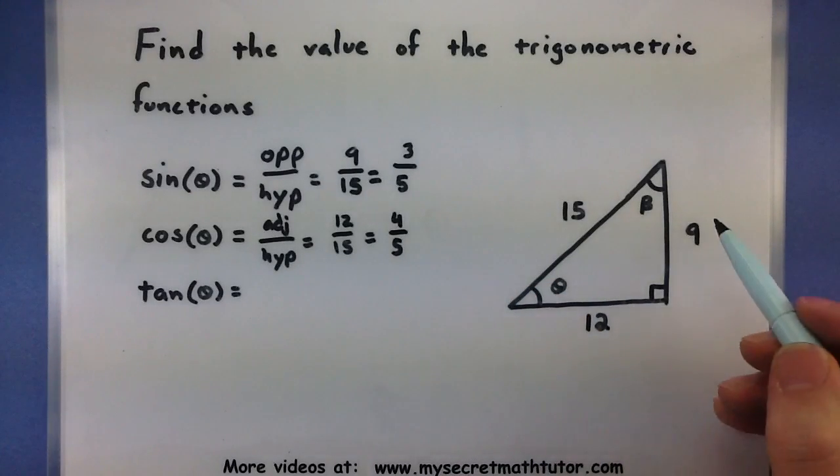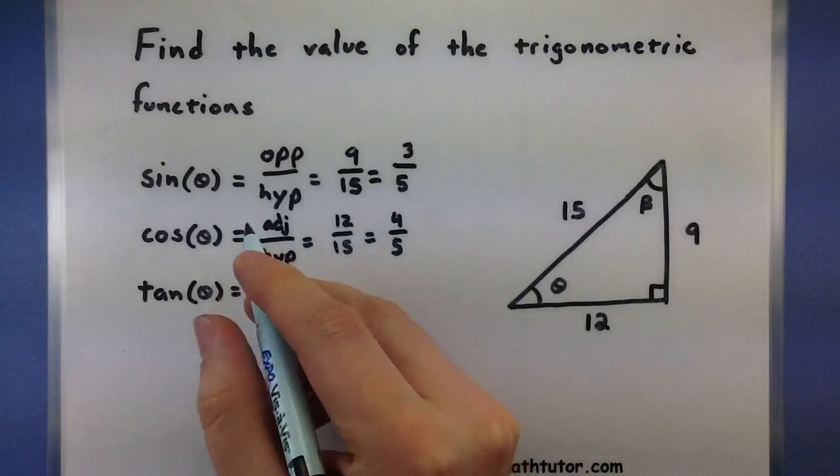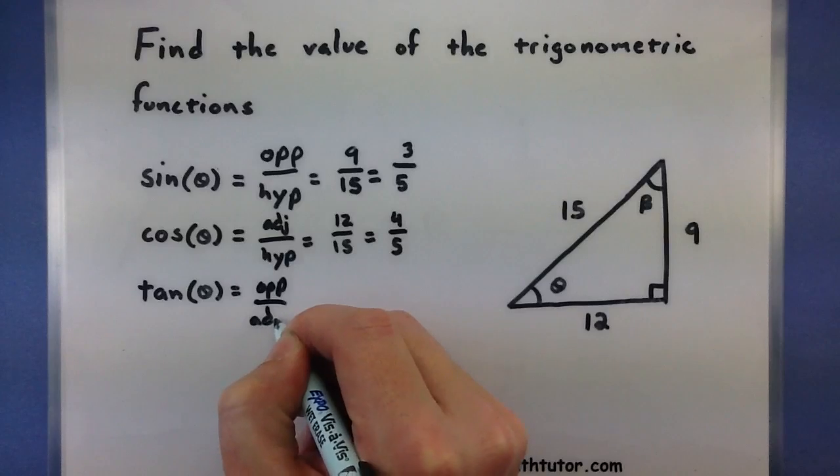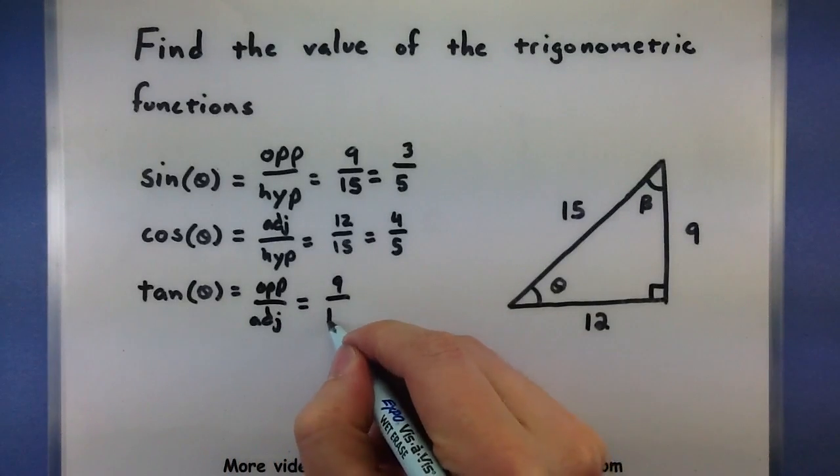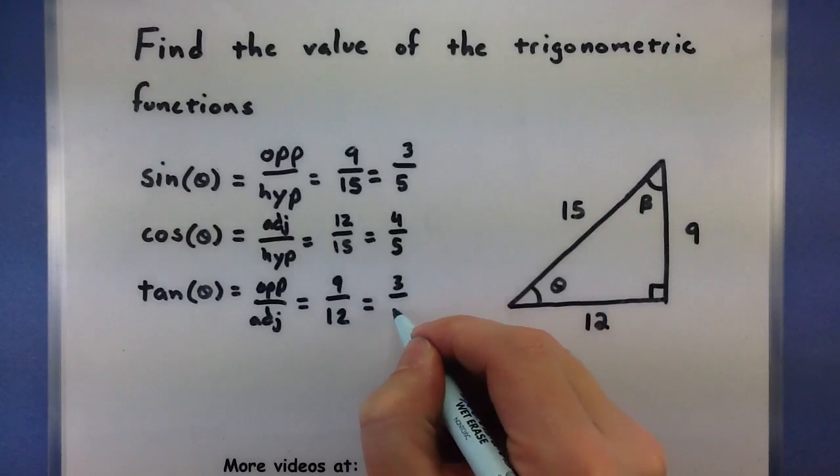Tangent of theta would be opposite over adjacent, and again, that's in relation to theta. Opposite over adjacent, 9 over 12, and this one reduces to 3 fourths.